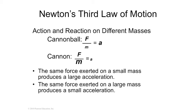The force of the bullet pushes against the gas and the back of the gun, propelling the bullet forward. The bullet, which weighs very little, has a huge force and accelerates quickly. The gun has the exact same force applied to it, but the gun weighs a lot, so it has a small acceleration and kicks backward. The bullet, weighing so much less than the gun, is accelerated much faster.